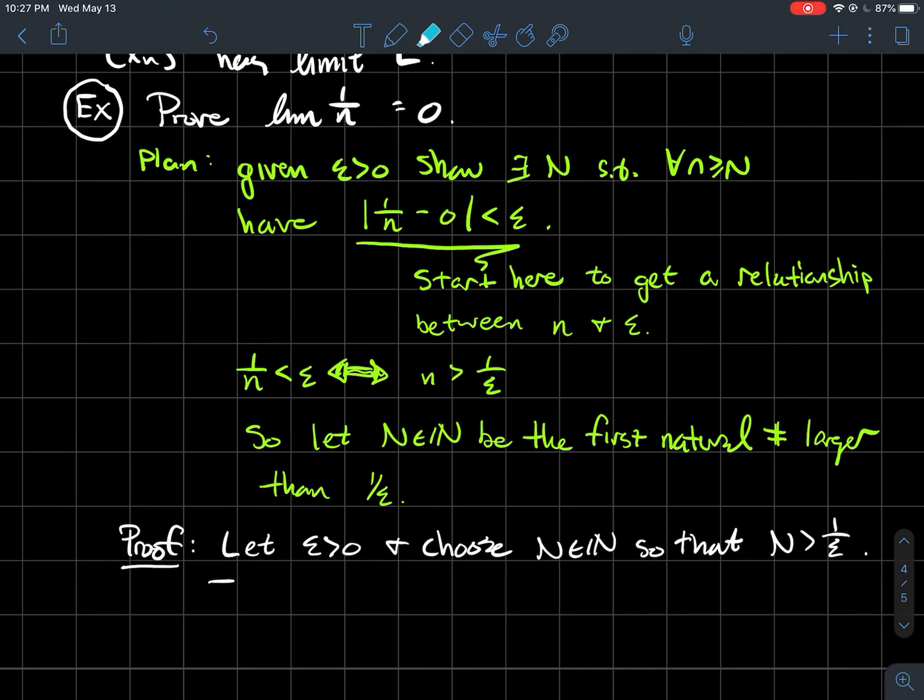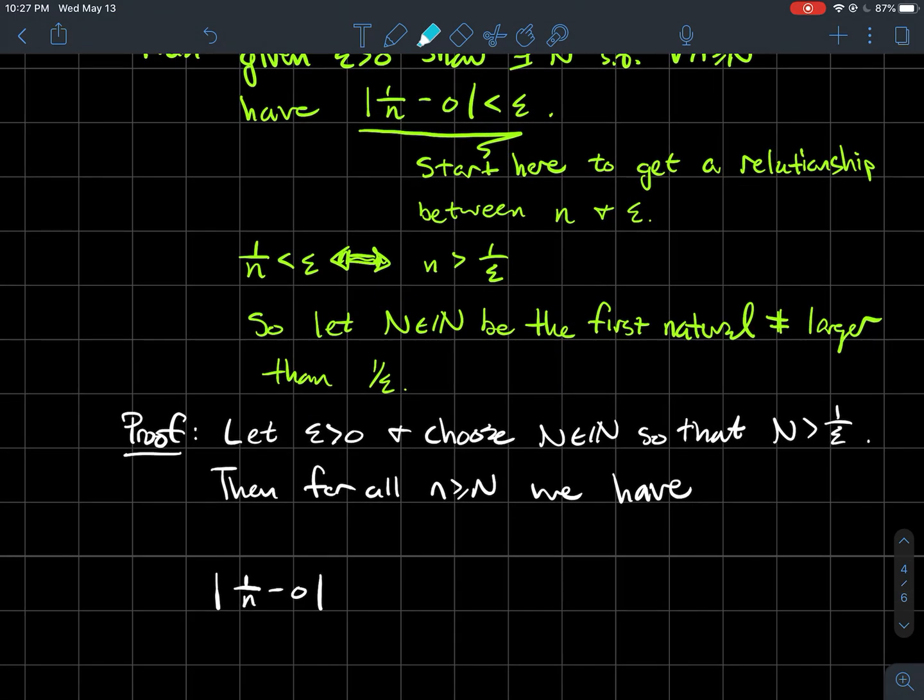Let's start our formal proof. Let epsilon be greater than 0 and choose N so that N > 1/epsilon. Then for every natural number n larger than N, we have |1/n - 0| = 1/n ≤ 1/N.